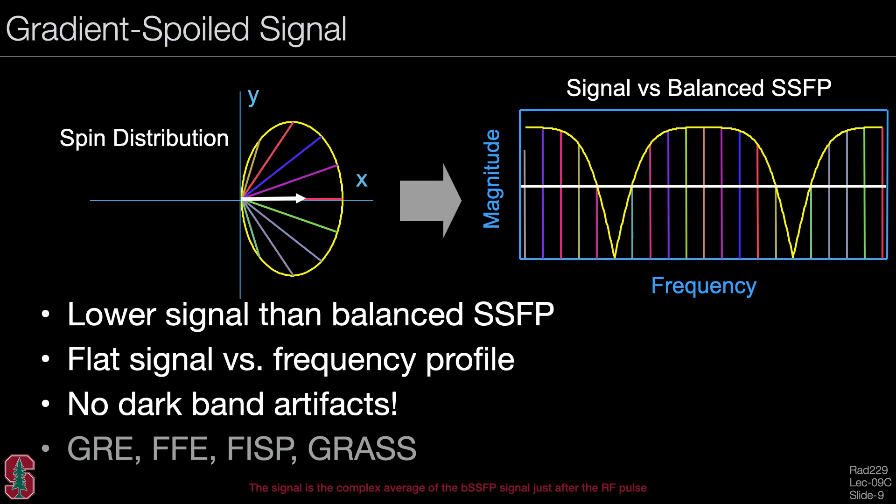Looking at the gradient spoiled signal: immediately following the RF pulse, the balanced SSFP distribution is an elliptical distribution with a net signal given by the white arrow. Plotting this on the frequency axis, the white line indicates the complex average — this is the signal seen in balanced SSFP. Because all possibilities are compressed within one voxel, we see the average. Notice the signal is lower than balanced SSFP, but we have a flat signal versus frequency profile, avoiding dark band artifacts.